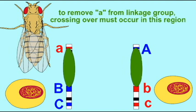And so therefore, crossing over can separate A from the B and C genes, but only if the crossover event occurs in this region.